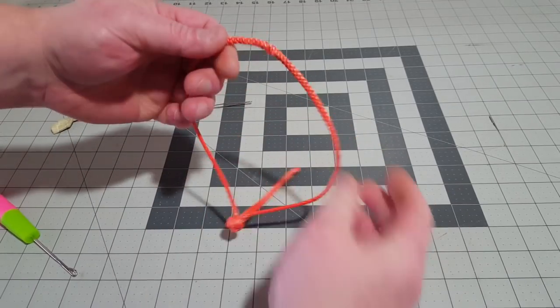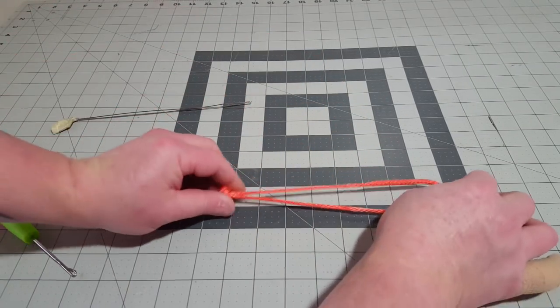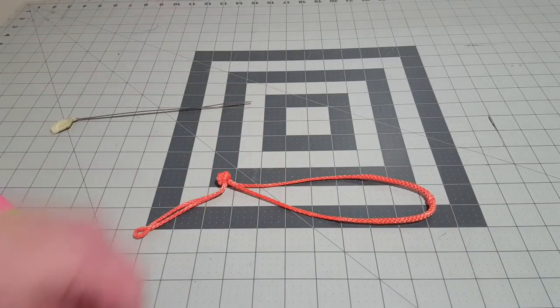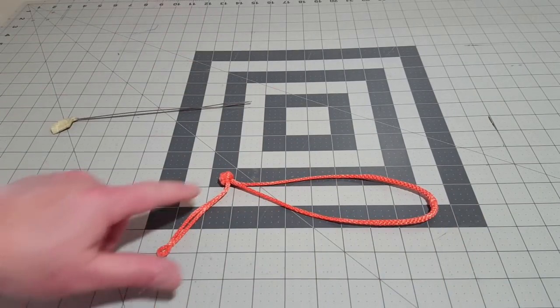So now that I have the last strand pulled through, I have a continuous loop. Here's my continuous loop and then I have a little soft shackle hanging out here on the end.